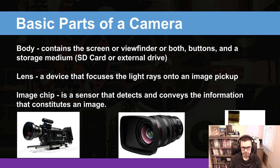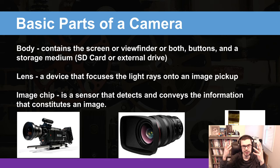The second part is the lens. It's a device that focuses the light rays into an image pickup, such as an imaging chip. The lens allows you to focus, and it has aperture blades that control the amount of light coming in. When that light comes down the chute of the lens, it then hits the imaging chip, which is in the back.